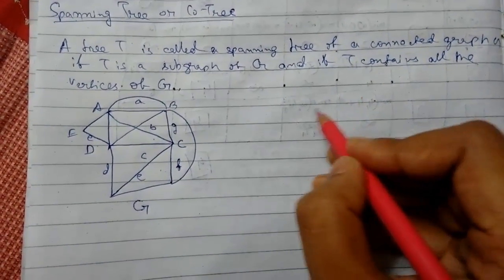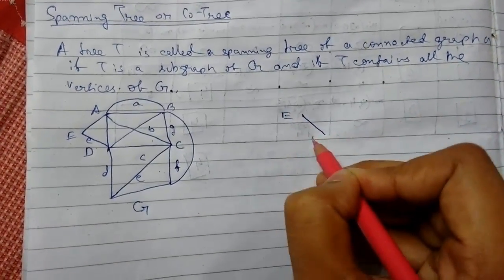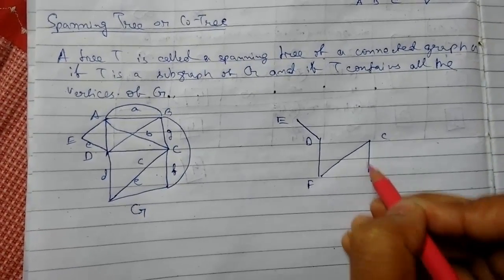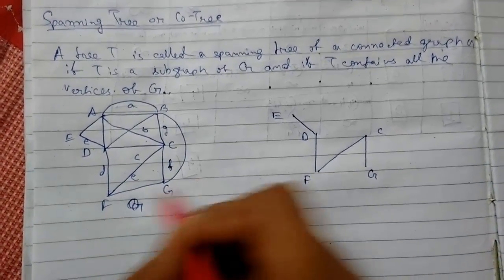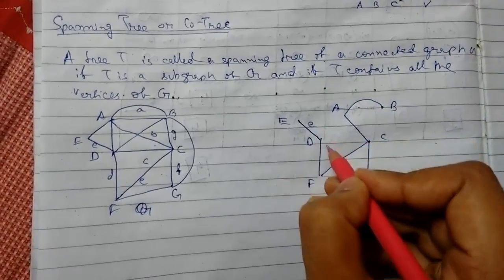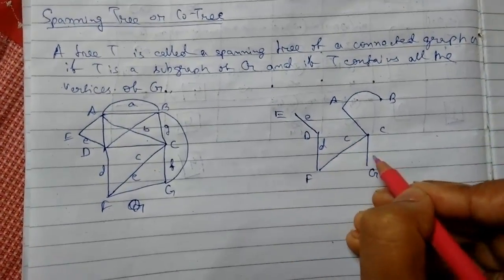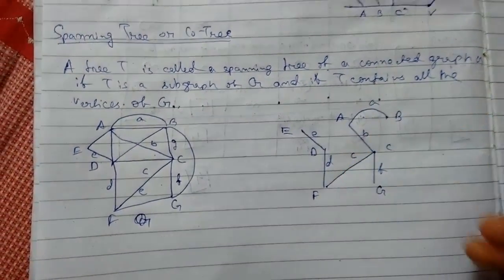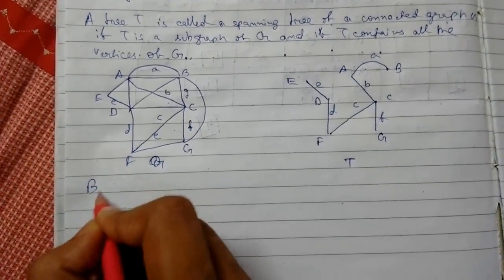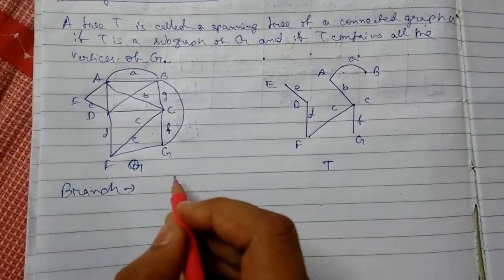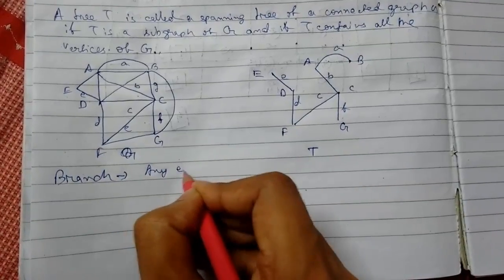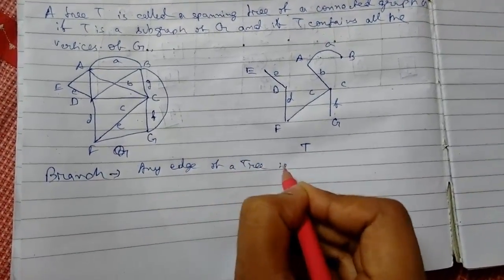To construct a spanning tree from graph G, it should be a subgraph of G and contain all vertices of G — vertices e, d, f, c, g, b, a. This is what the spanning tree looks like. Any edge of a spanning tree is called a branch of the tree.